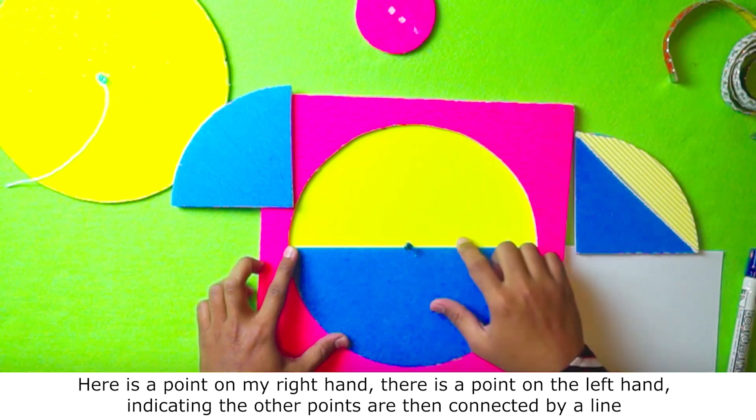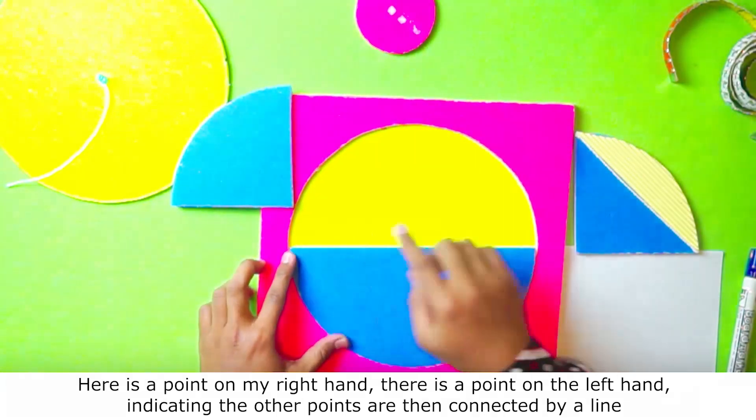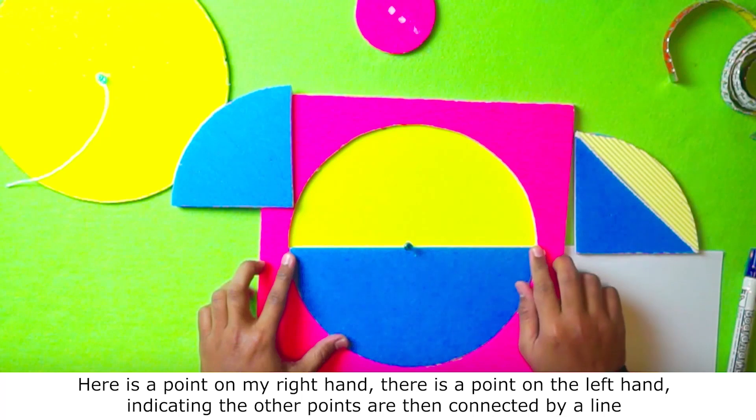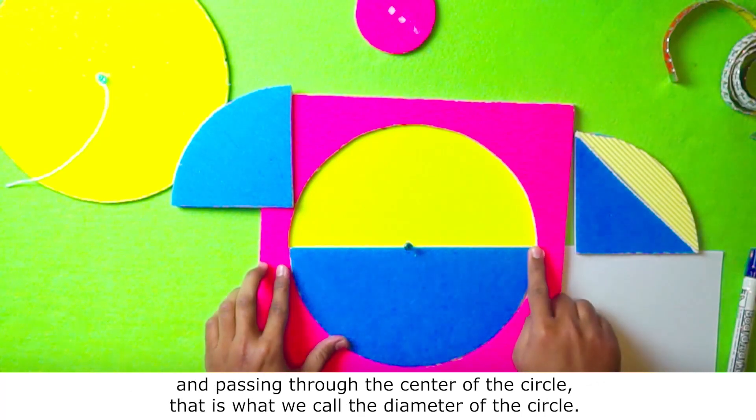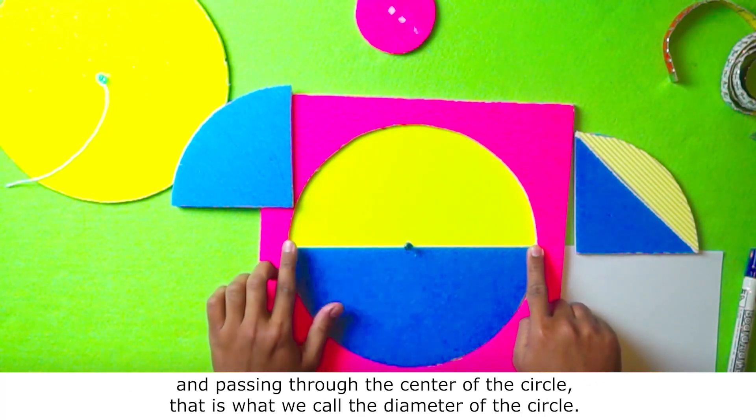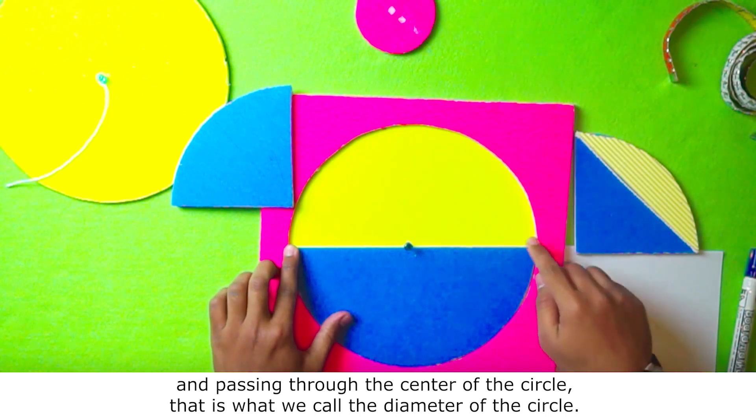Here is a point on my right hand. There is a point on the left hand, indicating the other points are then connected by a line and passing through the center of the circle. That is what we call the diameter of the circle.